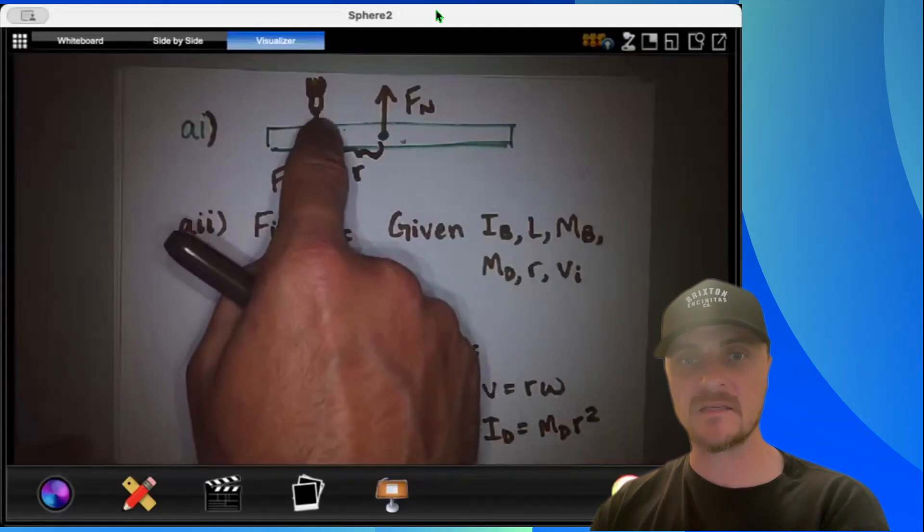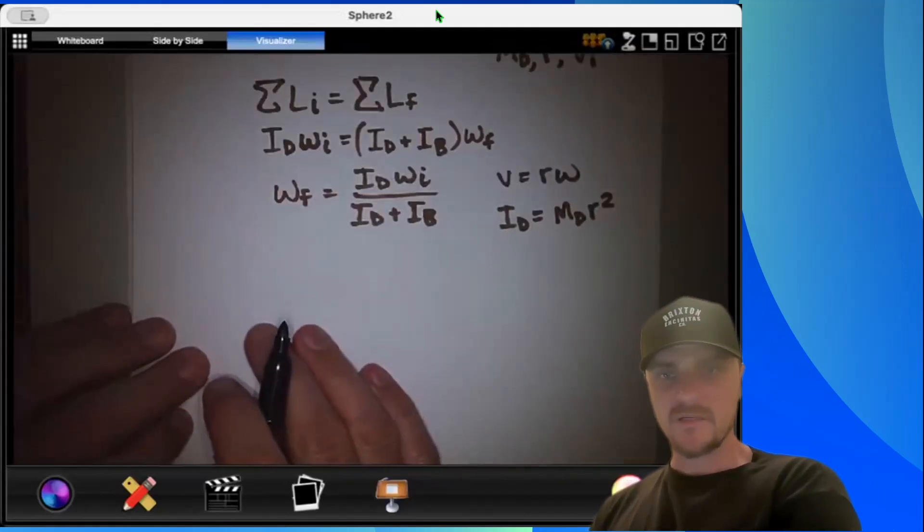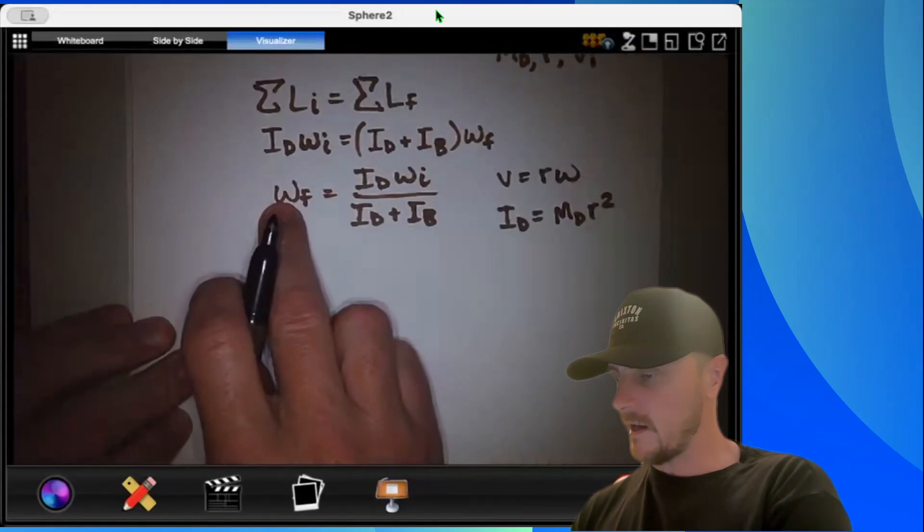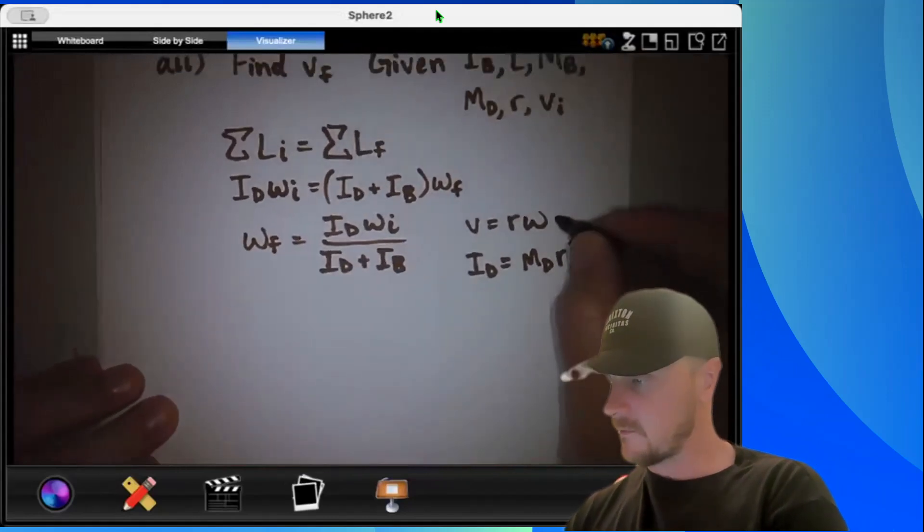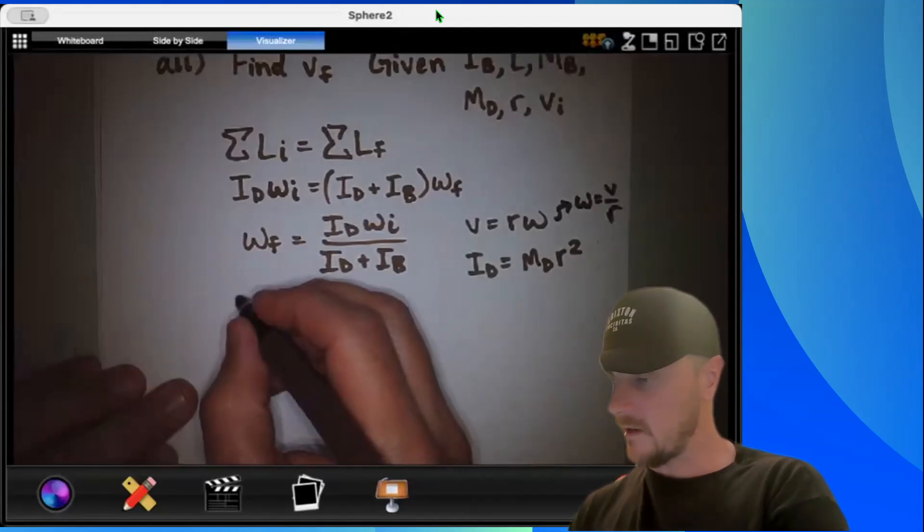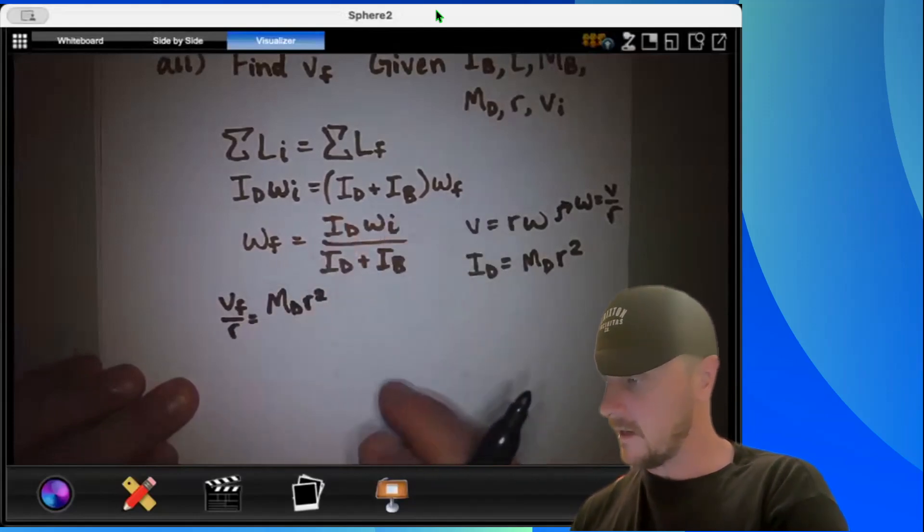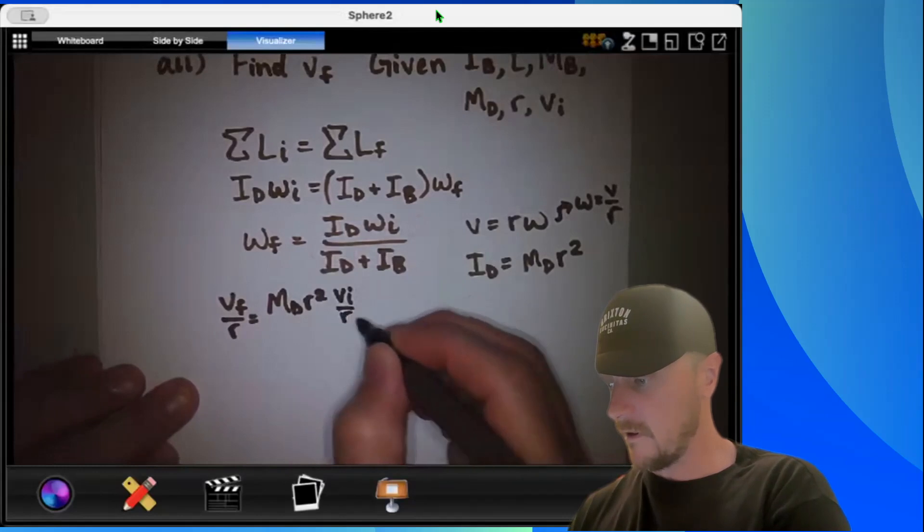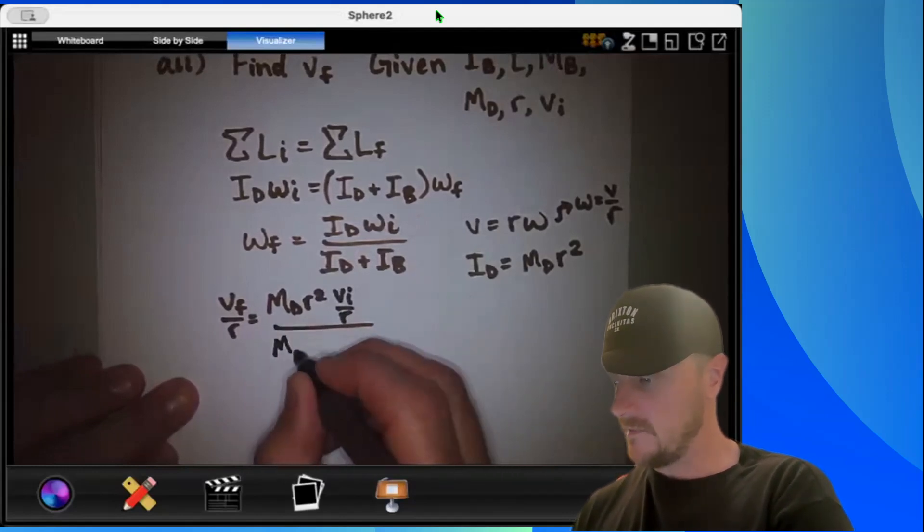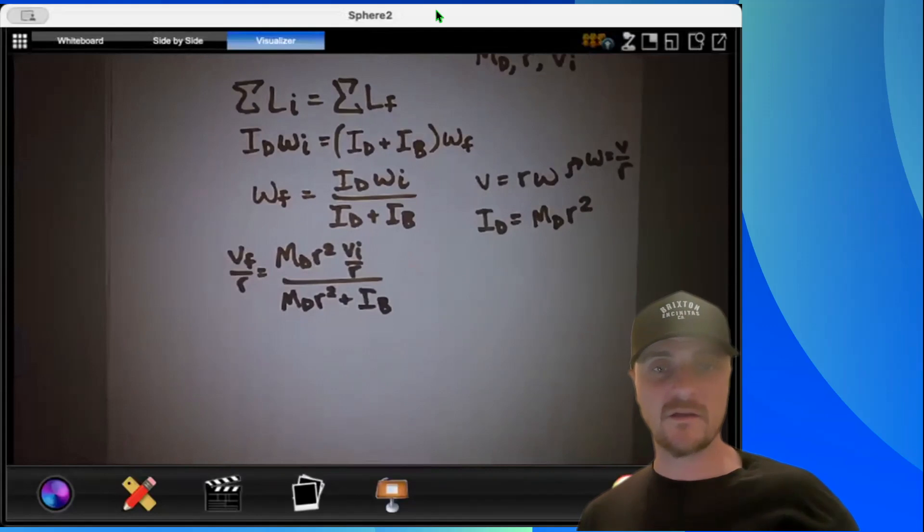So let's do a little bit of substitution here. For omega I could put in v over r. If you need to see that real fast, omega would be equal to v over r, and I'm going to plug that in. So I'll have vf over r equals md r squared times omega i, which would be vi over r, all over md r squared plus ib. The equation is looking a bit unruly at this point, but we're going to make it look nice, trust me.